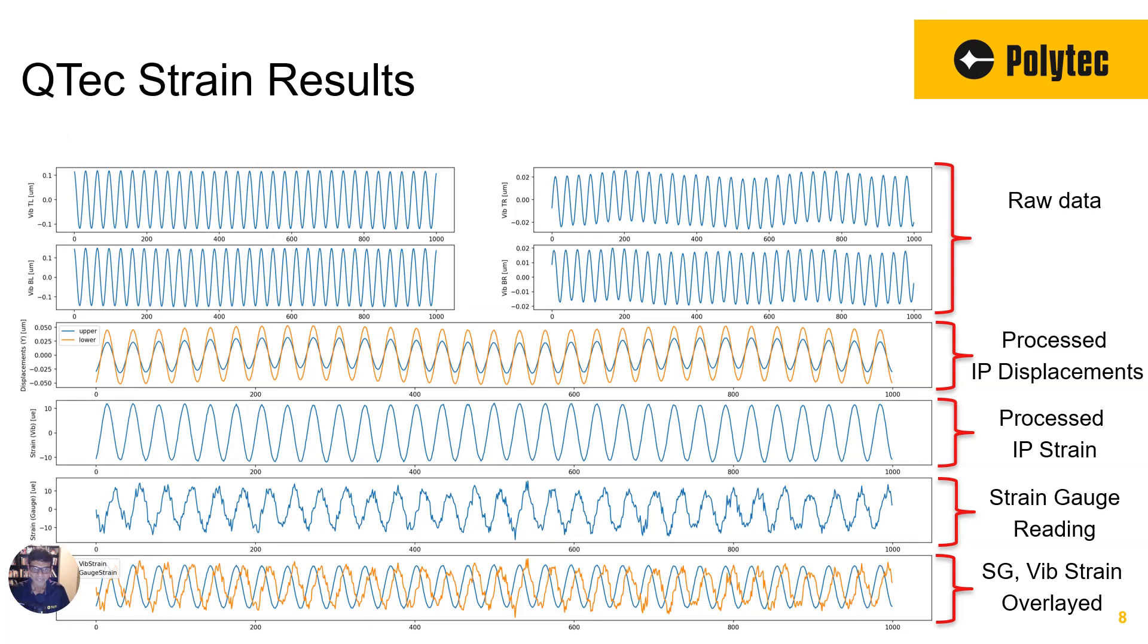This is the final slide. I know a lot of graphs, but let's deconstruct. So first step is just the raw data, right? So we collected the raw data from the four single-point vibrometers. We took the data, calculated the delta L, and that's how we got the in-plane components. That's this part.